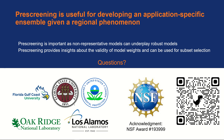Pre-screening is useful for developing application-specific ensembles that can simulate regional phenomena. Pre-screening is important because non-representative models can outweigh robust models. And pre-screening provides insight about the validity of model weighting and can be useful for subset selection. You can find more publications at the link shown here. We are also editing a book about machine learning applications in earth science, so if you are interested in contributing a chapter, please contact us. Thank you and ready for questions.